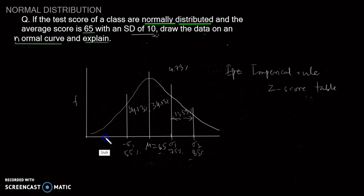Similarly, 13.59% of students scored between 45 and 55 because the standard deviation is 10.